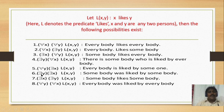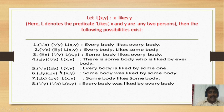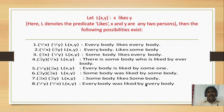Fifth: ∃x ∃y l(x, y) means somebody is liked by somebody — both are existential quantifiers. And also: ∃y ∃x l(x, y) similarly means somebody likes somebody. Sixth: ∀y ∀x l(x, y) means everybody is liked by everybody. These are the possibilities in writing predicates using quantifiers.